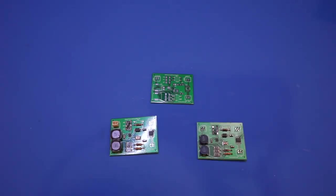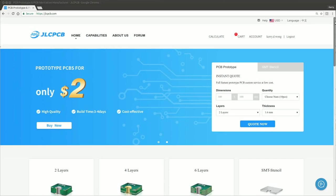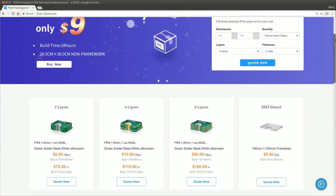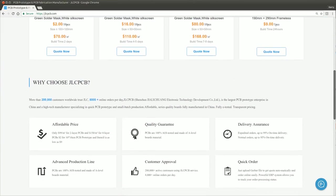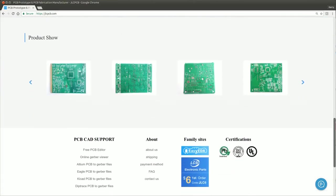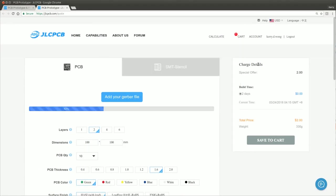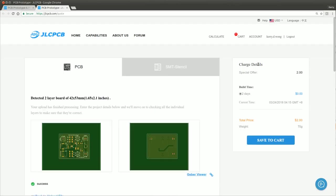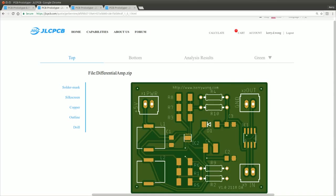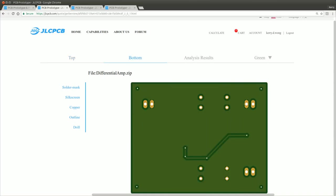Speaking of which, this video is sponsored by JLCPCB, where you can have your PCBs professionally made. JLCPCB offers hobbyists and professionals very affordable PCB manufacturing services. For instance, you can get 10 pieces of dual-layer PCBs made with a dimension up to 10cm by 10cm each for just $2.00 plus shipping.